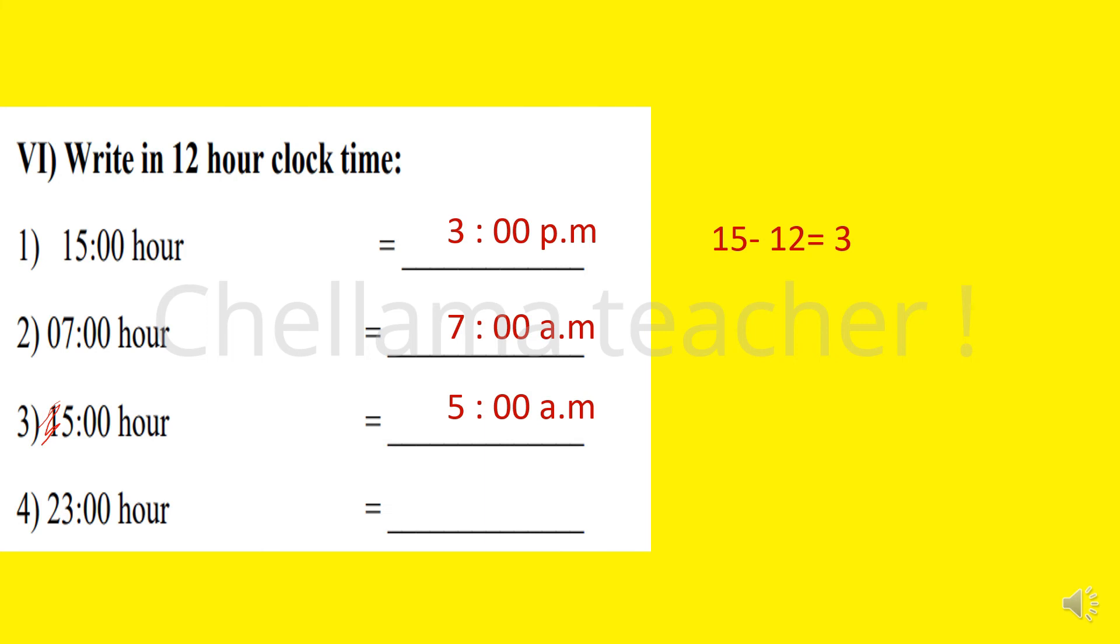The 4th question: 23 hour. As it crosses 12 noon, we have to subtract 12 from 23. So 23 minus 12 equals 11. Also, it crosses 12 noon, so we use PM. The time is 11 PM.